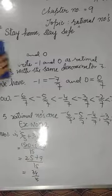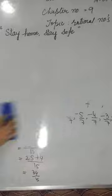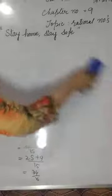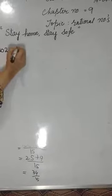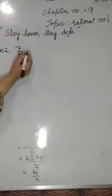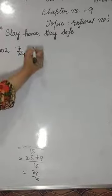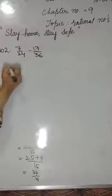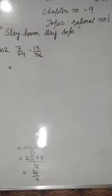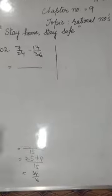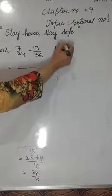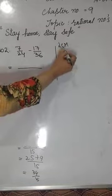Ab chalte hain question number 2 jo ke hai subtract. Question number 2: 7 by 24 minus 17 by 36. Aap ismein dekh rahe hain ke dono composite numbers hain. Iska matlab in dono ko hum pehle LCM nikalenge. Yahan se calculation shuru kijiye aur upar LCM likhiye: 24 aur 36 ka LCM nikalte hain.